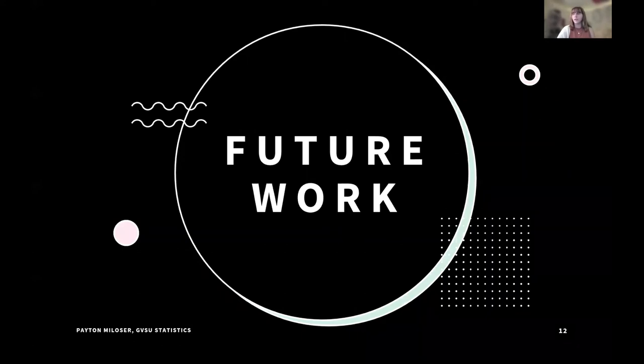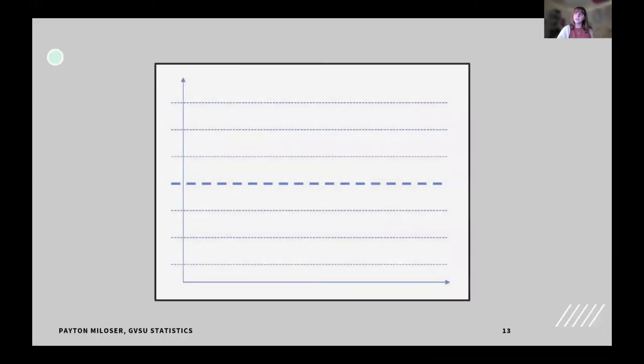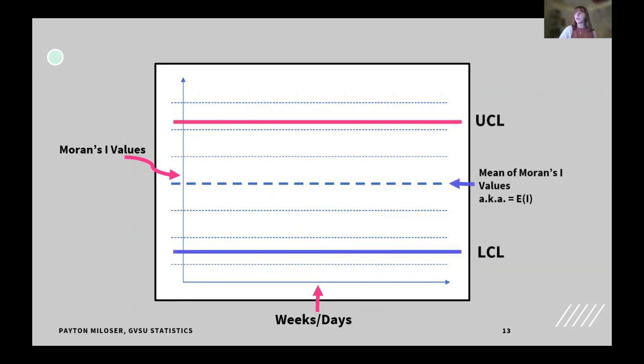What would I ideally be looking for in the future? I'm actually currently still working on this project and I'd ideally like to get the chart fully developed. Here's what the chart would look like. On the y-axis, we would have our Moran's i values. These are the things that we would want to fluctuate in between the bounds. On the x-axis, we would have our weeks or our days. Specifically, I'm using days right now for a specific period of time. We would define this ahead of time. I would then have our control limits and our mean or expected value of Moran's i of the values we have on the chart. Then we'd have our Moran's i values fluctuating on the chart in between everything.